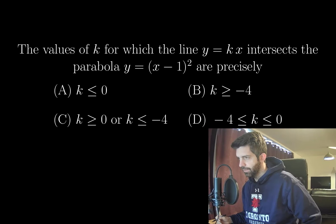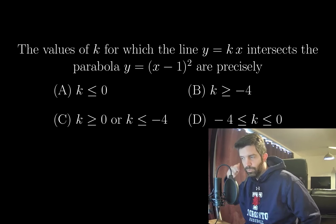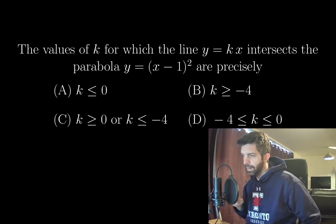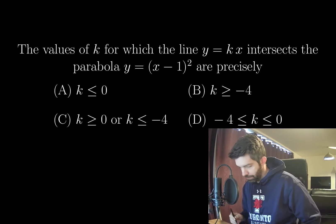I think the best way to figure this out is by starting with a diagram. We want to know what this parabola looks like. Once we have a graph of this parabola, we can figure out which lines intersect it. The line y equals kx goes through the origin with slope k, so we just want to determine which of those lines intersects the parabola.